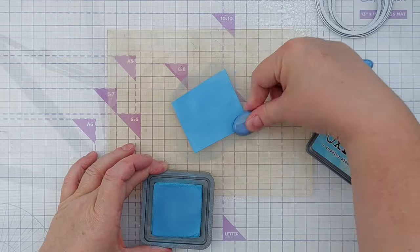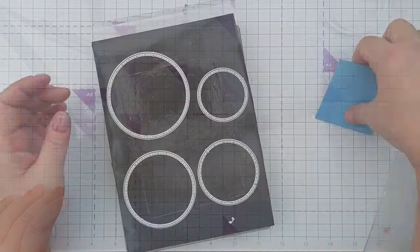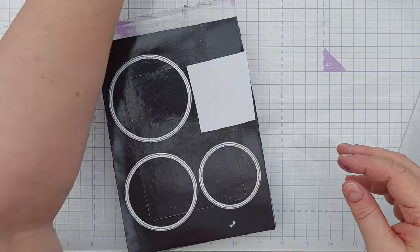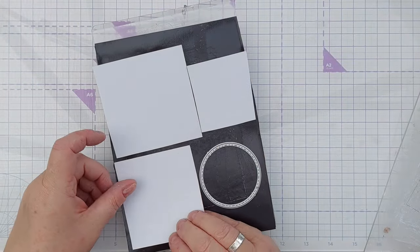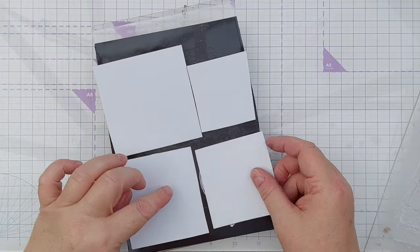Once I'd inked up, spritzed and dried my four pieces of card, I then used my circle dies to die cut out some circles, funnily enough.